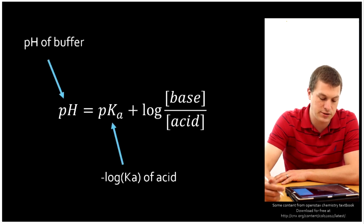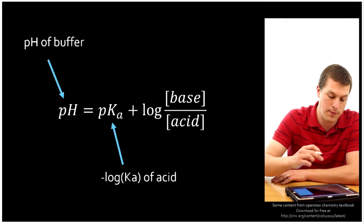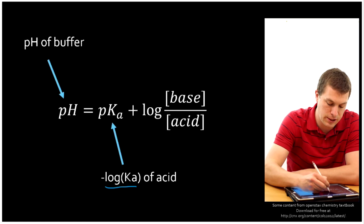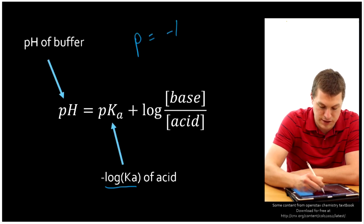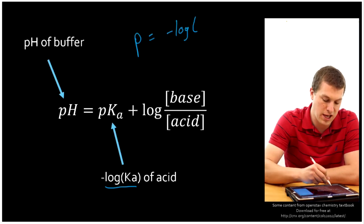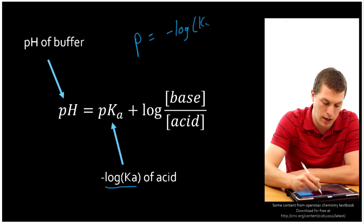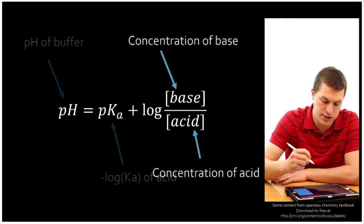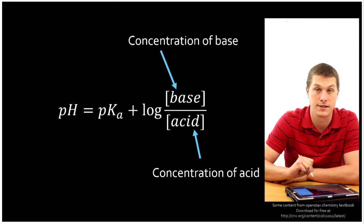This equation basically tells us that the pH of buffer is equal to our pKa. Now, pKa may be a new symbol for you, but that's just the negative log of our Ka. Whenever you see p anywhere, that just means negative log. The last part of that equation is just the concentration of our base divided by the concentration of our acid.